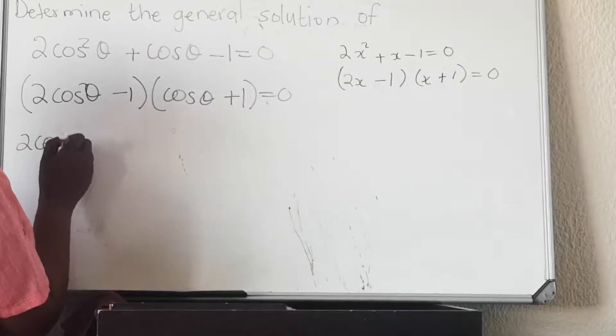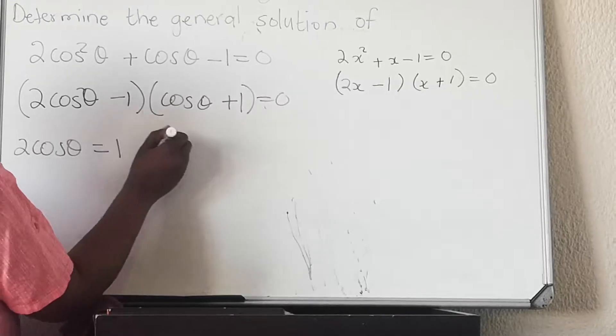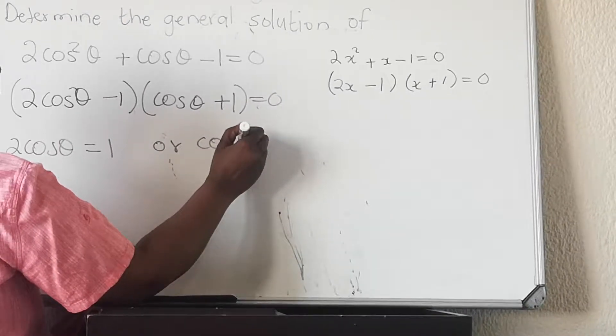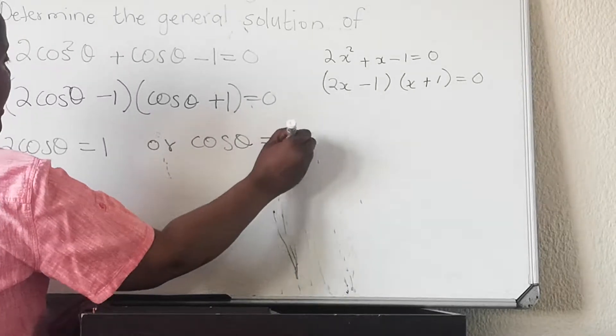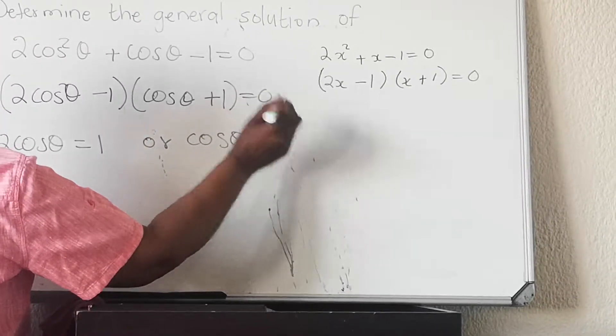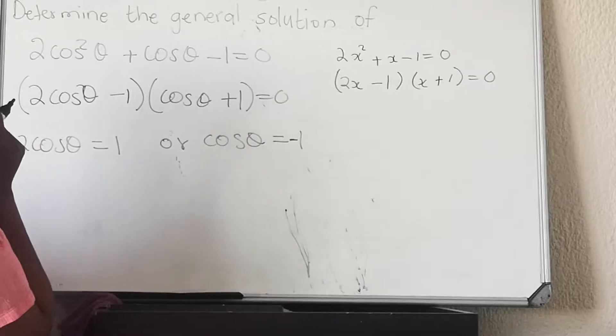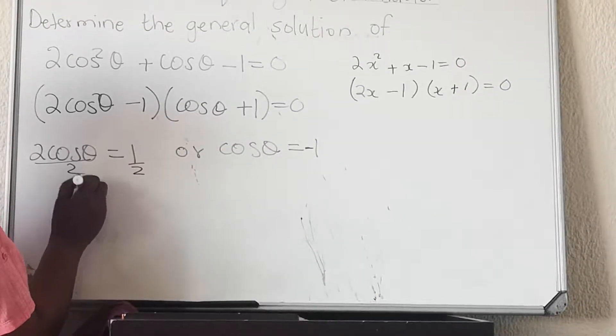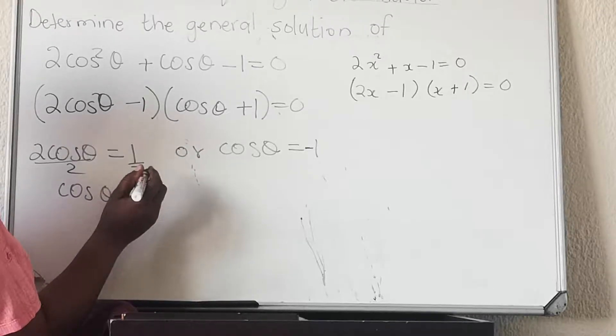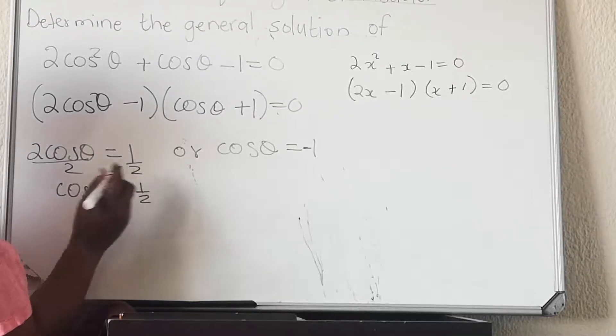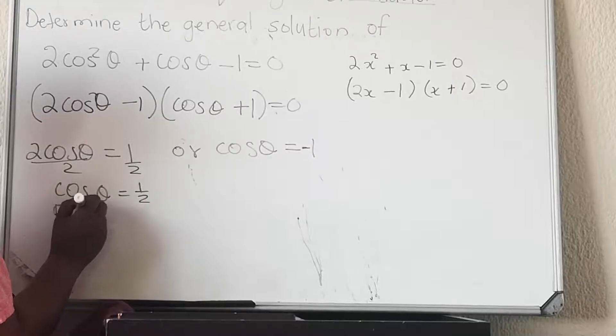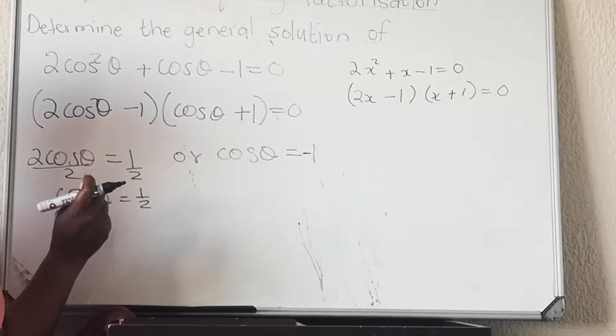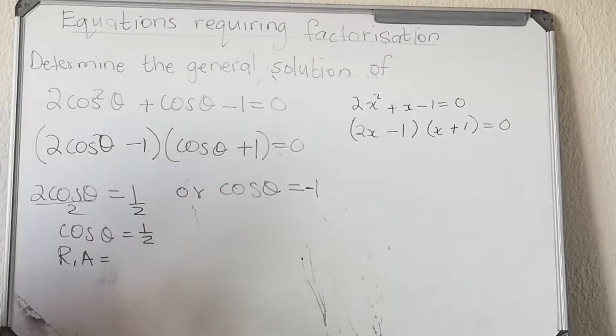Then you have 2cos θ = 1 or cos θ = -1. You take your calculator. For this one you divide by two first, then you have cos θ = 1/2. Take your calculator and find your reference angle.